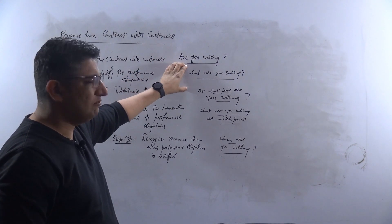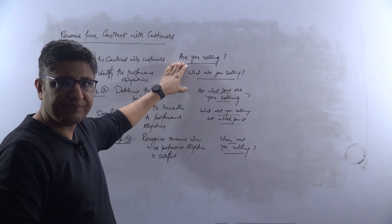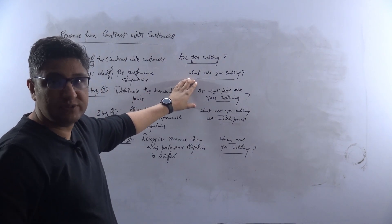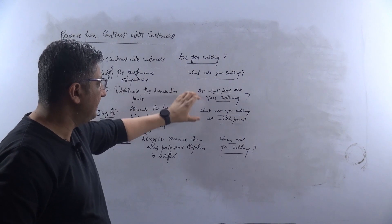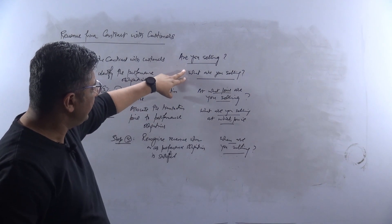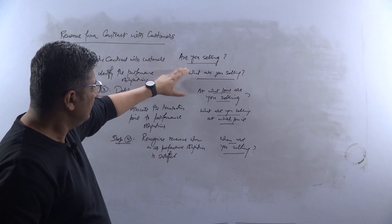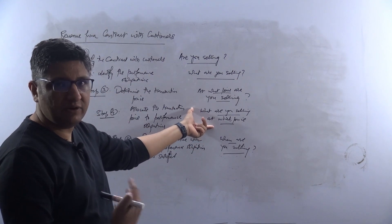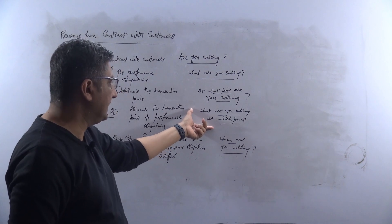The third question is, at what price are you selling it? And then, whatever you are selling, those items, at what price are you selling those items? So this is the total price, and this is the price of individual items.